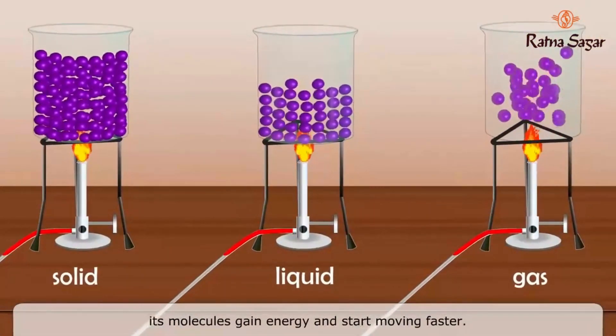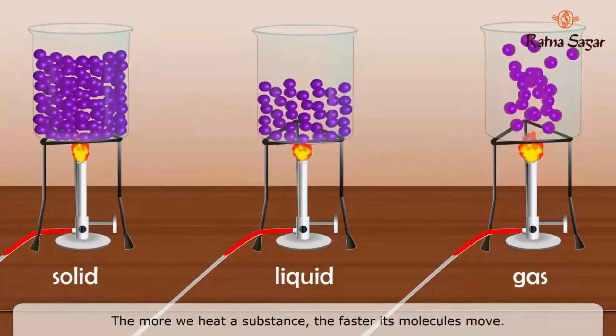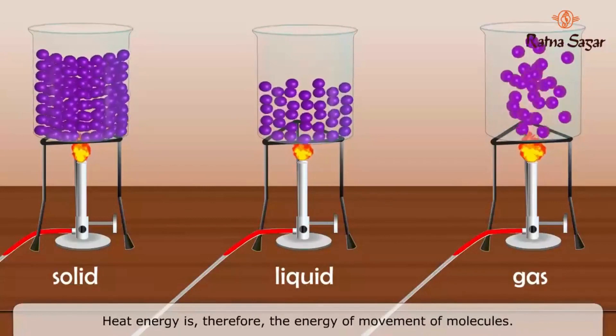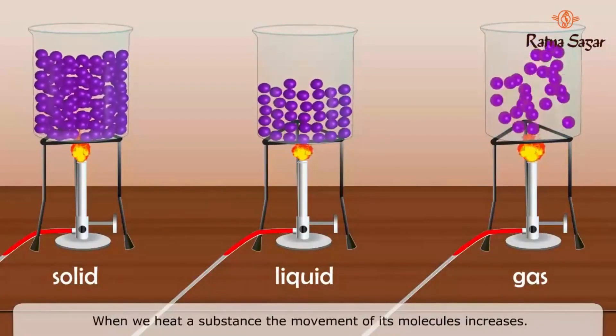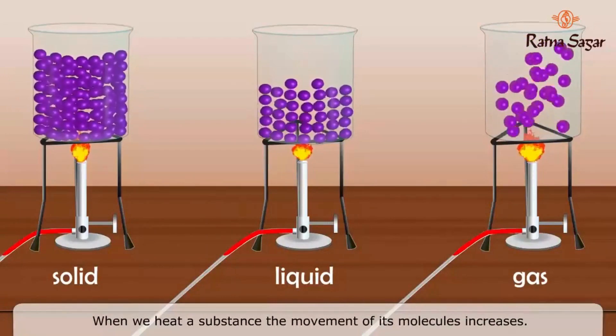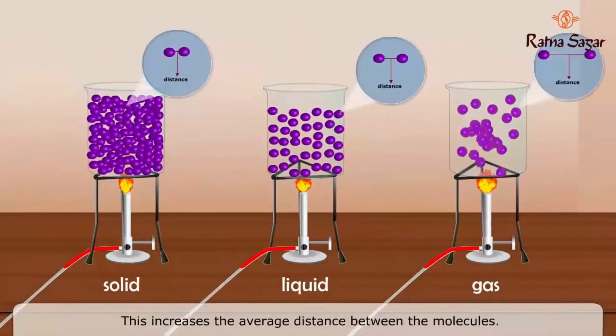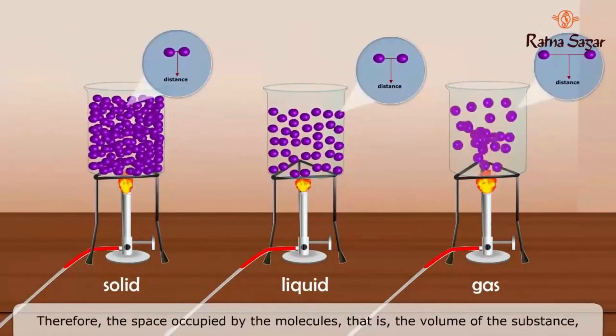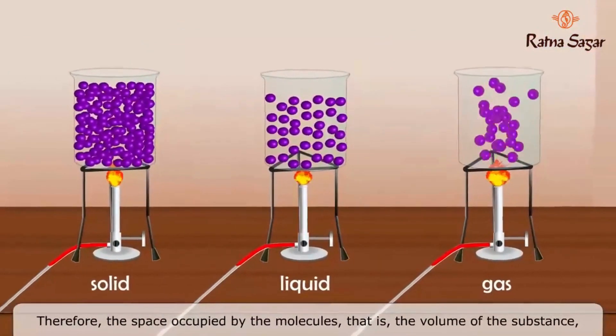The more we heat a substance, the faster its molecules move. Heat energy is therefore the energy of movement of molecules. When we heat a substance, the movement of its molecules increases. This increases the average distance between the molecules, therefore the space occupied by the molecules, that is the volume of the substance, increases. We see that heat causes expansion.